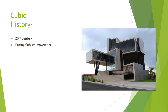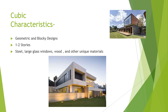The Cubic Architectural Style originated in the 20th century. It is most common from 1995 to today, and was used during the Cubism movement. Characteristics include designs made to resemble basic geometric shapes like squares and very blocky designs. They are usually one to two stories tall, built out of steel with large glass windows and other materials.